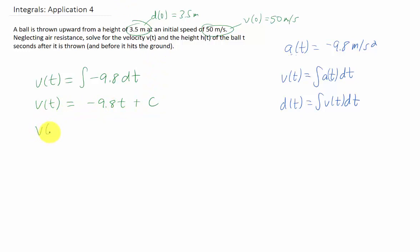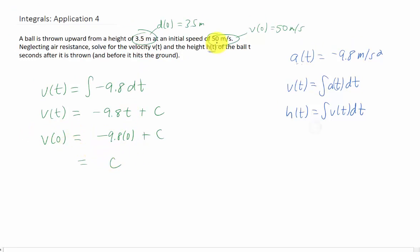To figure out what that constant is, we can plug in time equals 0. And our velocity function gives us that our initial velocity is c. Of course, the problem tells us that our initial velocity is 50 meters per second. So c equals 50, and our velocity function is then negative 9.8t plus 50.